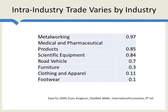Intra-industry trade also varies by industry. For medical and pharmaceutical products, the United States both exports and imports a lot, so intra-industry trade is very high. For footwear, the United States mostly imports and doesn't export much. Other countries may export a lot of footwear without importing it. So around the world, footwear tends to have low intra-industry trade — countries are either exporting it or importing it, not both.